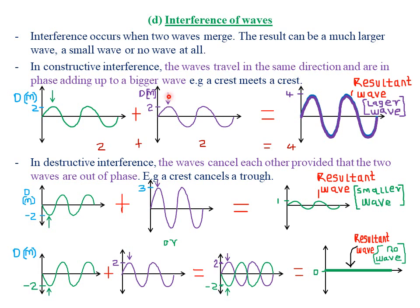Let's look at a case scenario. We have our first wave traveling in this direction, starting with a crest on the positive side of displacement. The second wave is also starting on the positive side. These waves have the same amplitude of two, the same period, and the same frequency. Therefore, they are traveling in the same direction and are said to be in phase. When these two waves merge, an amplitude of two plus two gives us a much larger wave with an amplitude of four.